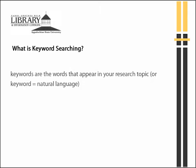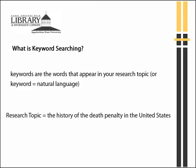Keywords are the words that you decide to use when you're searching for information. They are the words that appear in your research topic. If you were looking for information on the history of the death penalty in the United States, your keywords would be history, death penalty, and United States.